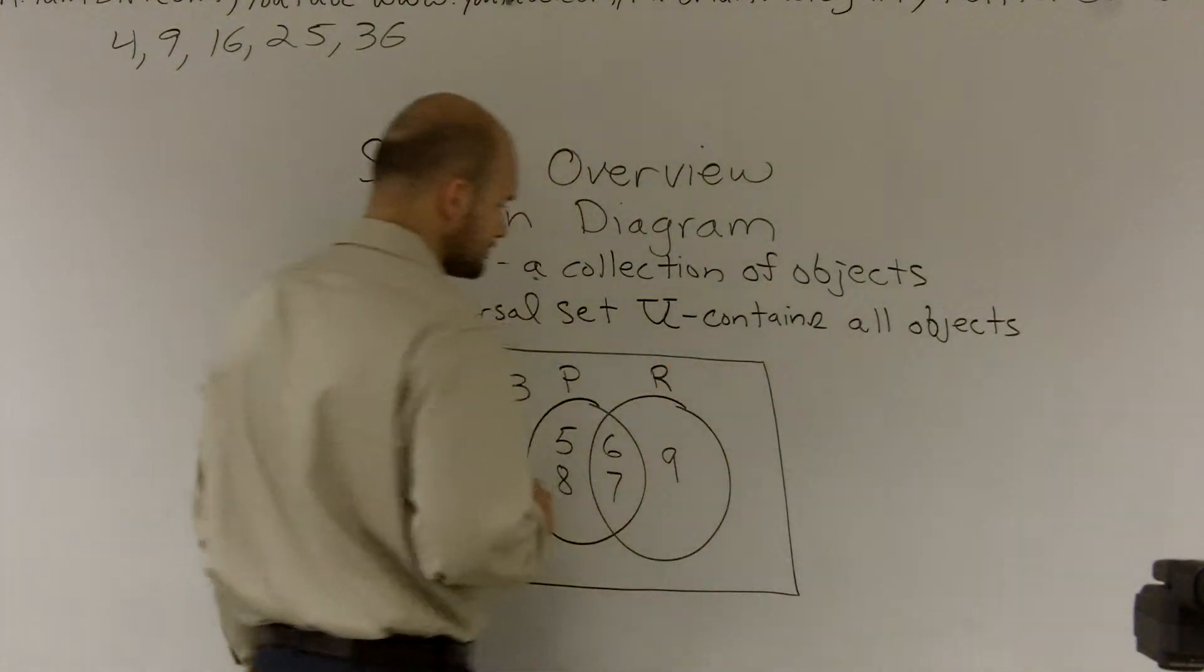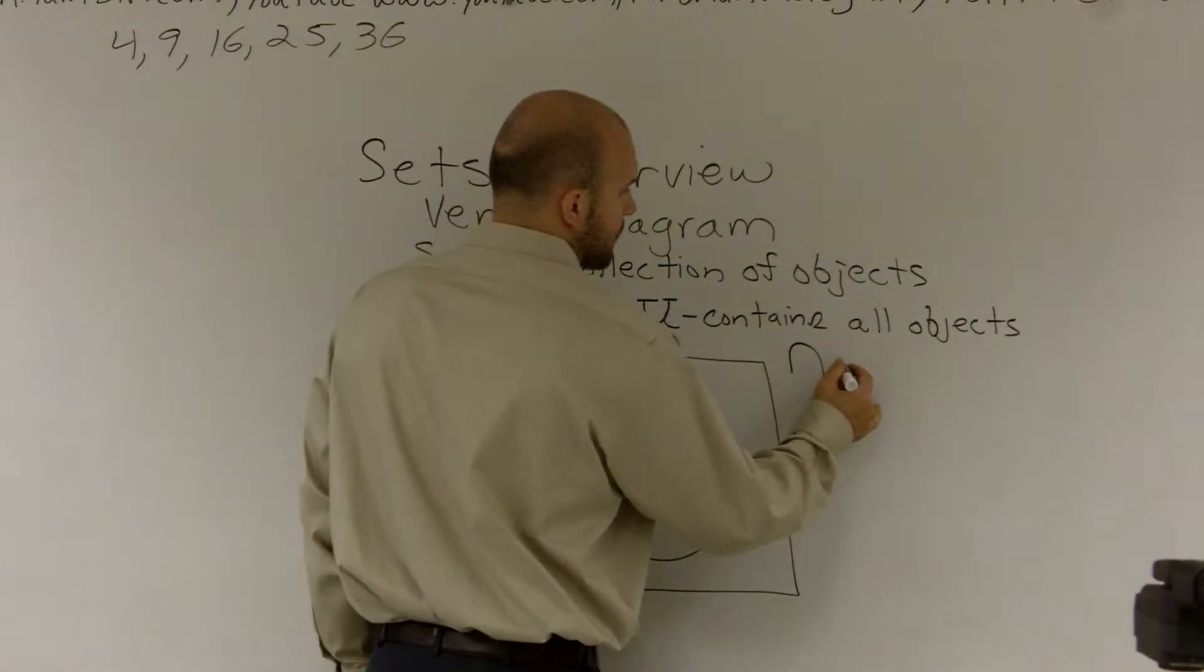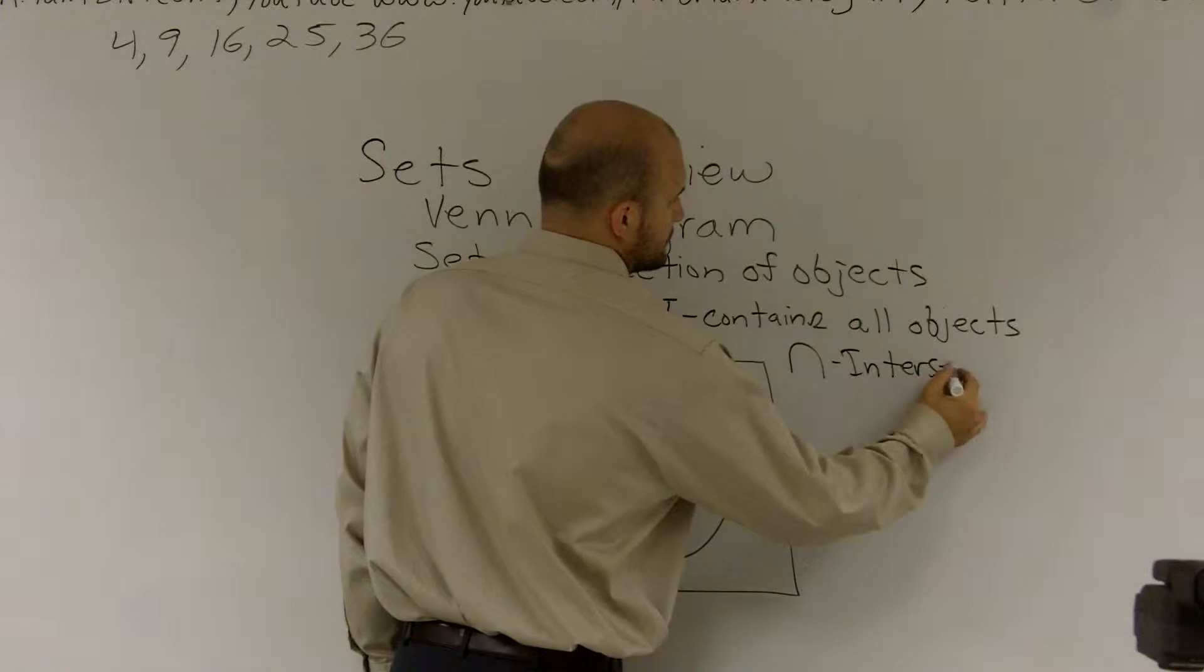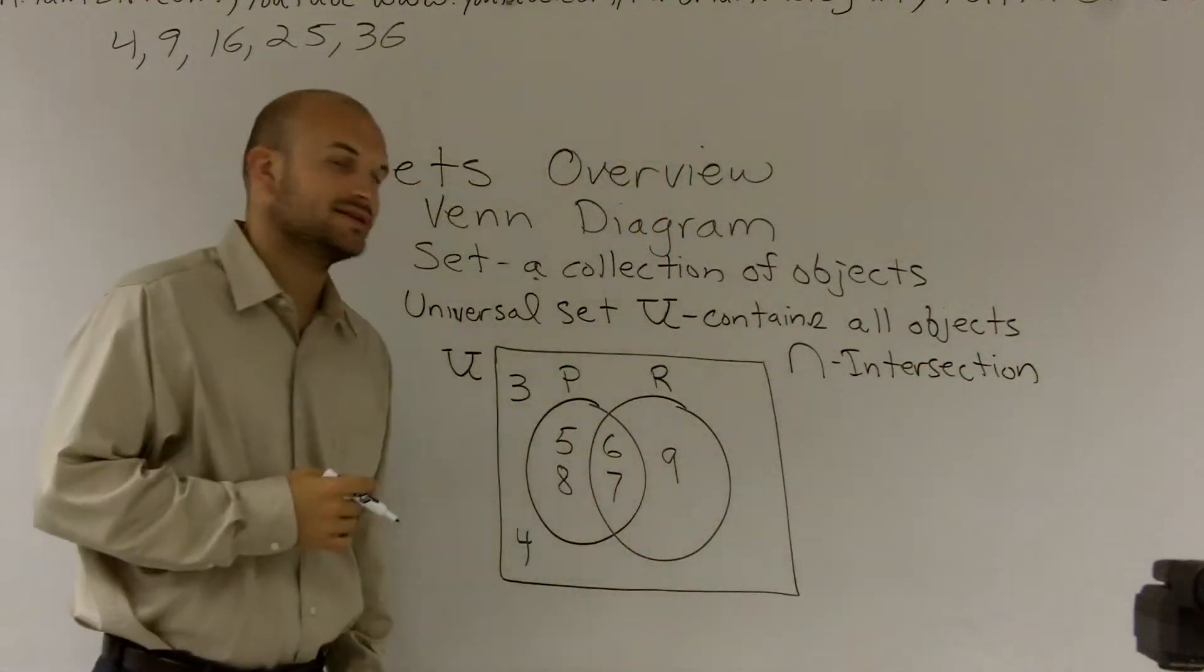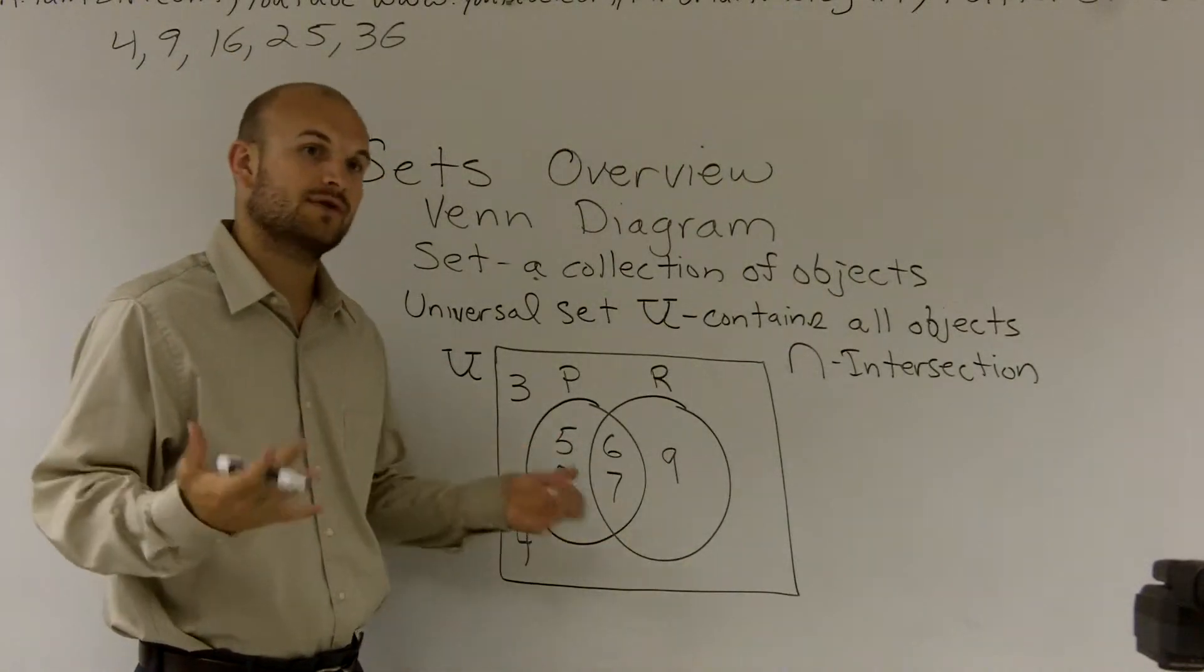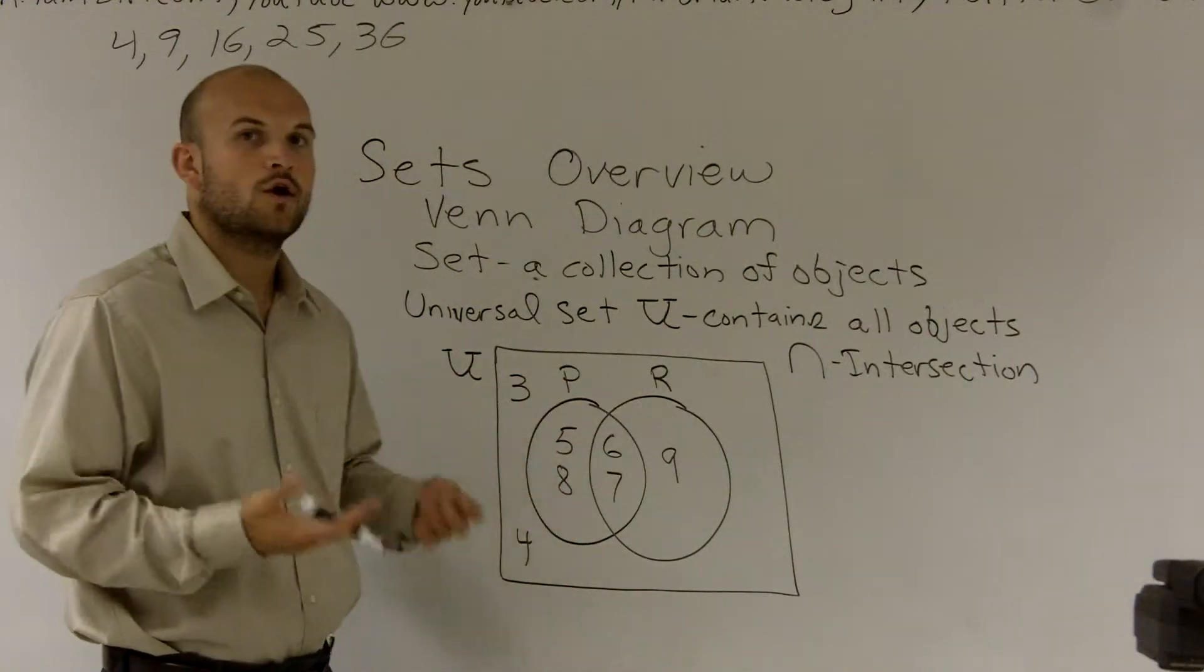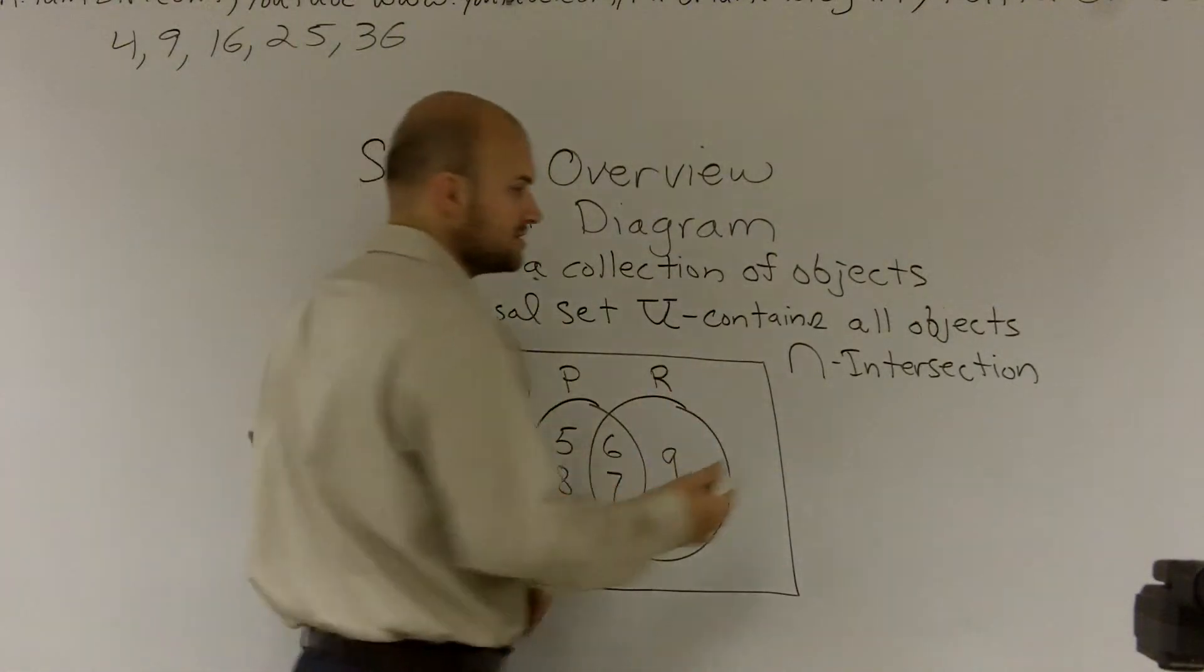So the first thing we're going to work with is intersection. I'm just going to give an abbreviated definition. The intersection is what two sets share, or you could also say what they have in common. Or when looking at a Venn diagram, it's also helpful to say where two sets intersect. So I'm just going to write some keywords.